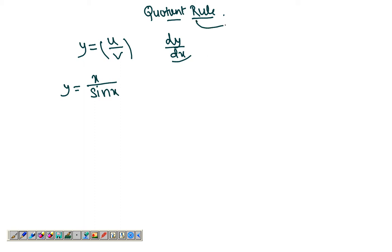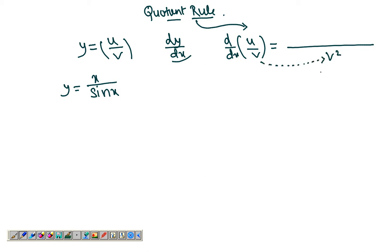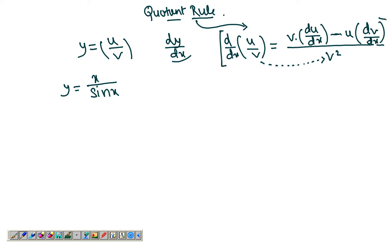Simply apply the quotient rule, which says d over dx of u over v equals: in the denominator you have the square of the function in the denominator. Then the function in the denominator remains as is and you differentiate the function in the numerator, which is du over dx. And here you have a minus sign, unlike the product rule, and then the function in the numerator as it is and the derivative of the function in the denominator, which is dv over dx. So this is v, this is u. That's the quotient rule.